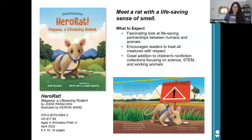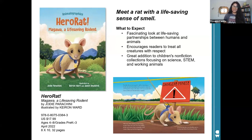In a similar vein, we have Hero Rat Magawa: A Life-Saving Rodent. Magawa is an African giant pouched rat with a special skill — sniffing out buried land mines. The book follows this Hero Rat from training at a university in Tanzania to working in the field in Cambodia, to winning a gold medal for her efforts to make land safe for humans and animals. This is a Booklist star review title and a fun series that kids will enjoy.